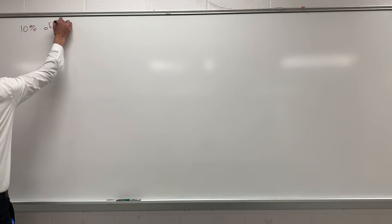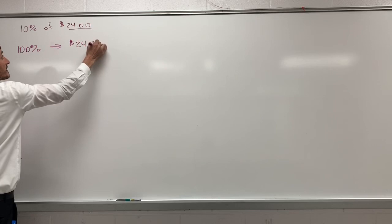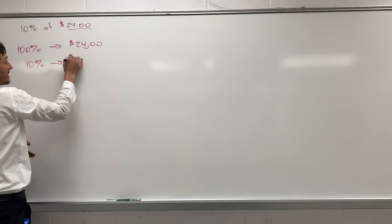$24 is the total cost of the item. So 100% of the total cost, we're going to consider 100% of the total cost to be $24. To find 10% is nothing more than moving the decimal one place to the left, which gives us $2.40.